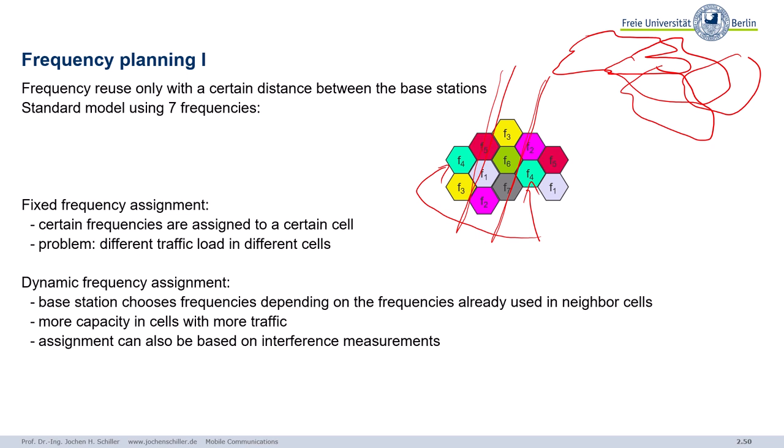The classical fixed frequency assignment assigns certain frequencies to certain cells. But what if you have different traffic loads in different cells? At noon in downtown shopping areas you need more capacity — more spectrum — but in the evening traffic shifts to where bars and restaurants are. This is why we use dynamic frequency assignment, also called dynamic channel assignment (DCA). Neighbor cells can lend part of their spectrum to cells with more traffic, giving more capacity where needed.